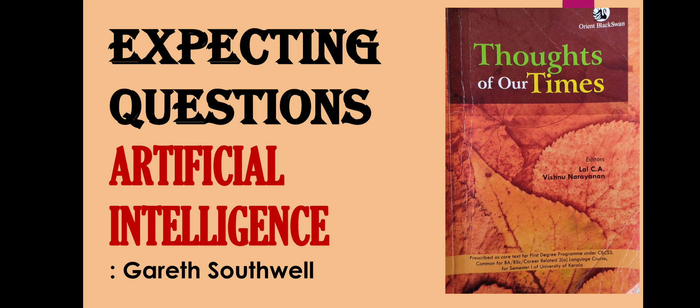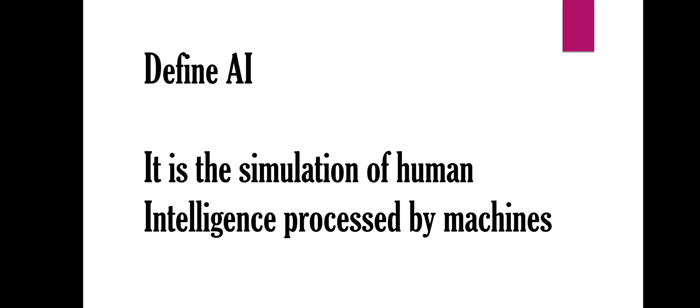The first question is: define AI. Artificial Intelligence is when machines demonstrate intelligence, which means it is the simulation of human intelligence processed by machines. For example, if we have a face detector on a phone, this is an example of AI.